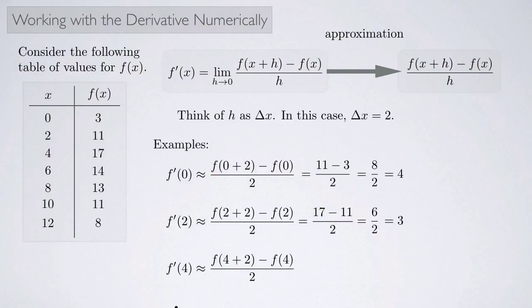I'll look at one more: how about f'(4)? That's f(4+2) which is f(6), so we have f(6) minus f(4), in other words 14 minus 17 over 2, which is negative 3 over 2, which is negative 1.5.